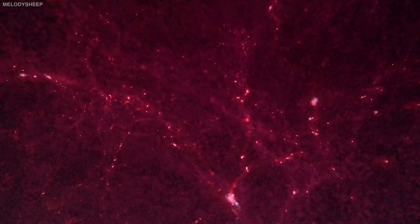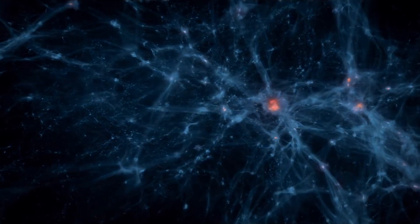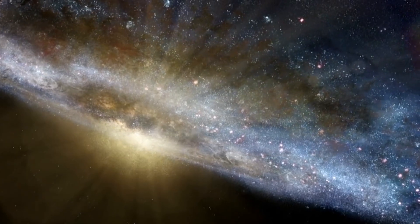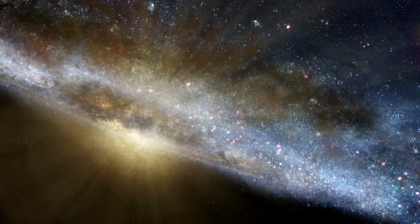However, as everything expanded and took up more room, the temperature dropped. The tiny particles then clumped together to form atoms, which then clumped together over time to form the stars and galaxies we see today.